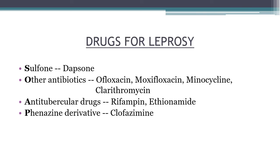Memorize the drugs used to treat leprosy with the mnemonic SOAP: S = Sulfone derivative (dapsone — the most common, cheapest, and most important drug); O = Other antibiotics (ofloxacin, moxifloxacin, minocycline, clarithromycin); A = Anti-tubercular drugs (rifampin, ethionamide); P = Phenazine derivative (clofazimine). Dapsone, rifampin, and clofazimine are the most important drugs for leprosy treatment.